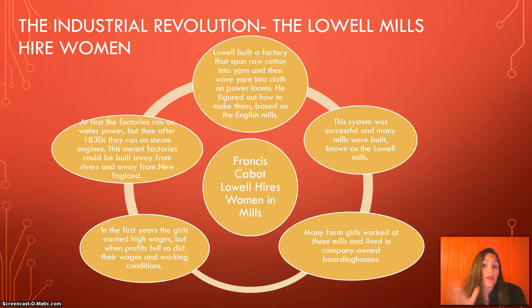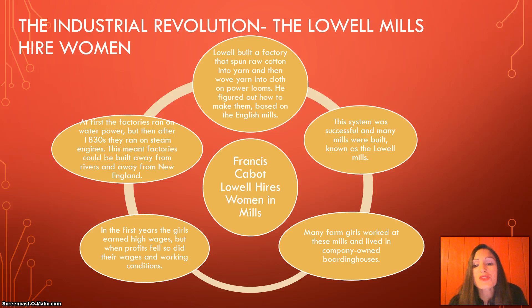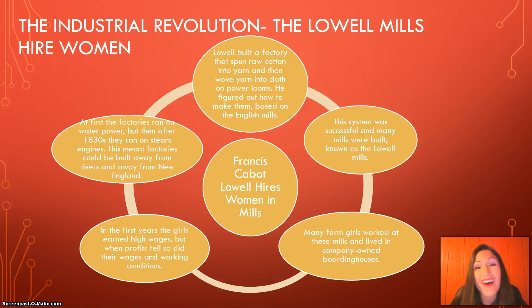Francis Cabot Lowell built a factory that spun raw cotton into yarn and then wove this yarn into cloth on powerful looms — he figured out how to make them based on the English mills. This system was successful and many mills were built, known as the Lowell mills after him. Many farm girls worked at these mills and lived in company-owned boarding houses. In the first years, the girls earned very good wages, but when profits went down, wages dropped as well, and working conditions became very poor. At first the factories ran on water power, but after the 1830s they ran on steam engines, which allowed factories to be built away from rivers and therefore away from New England — so the factory system spread further.